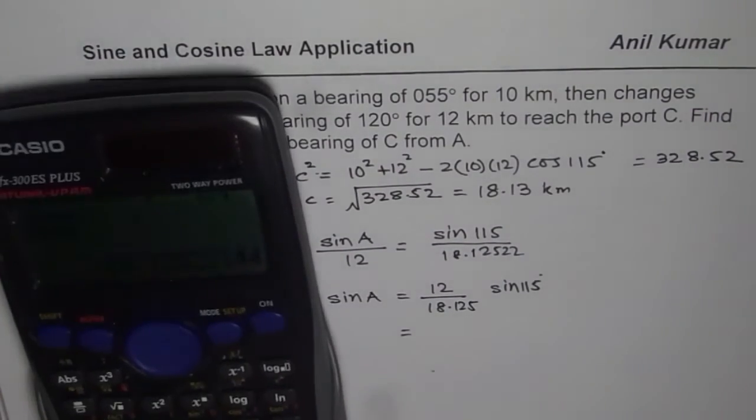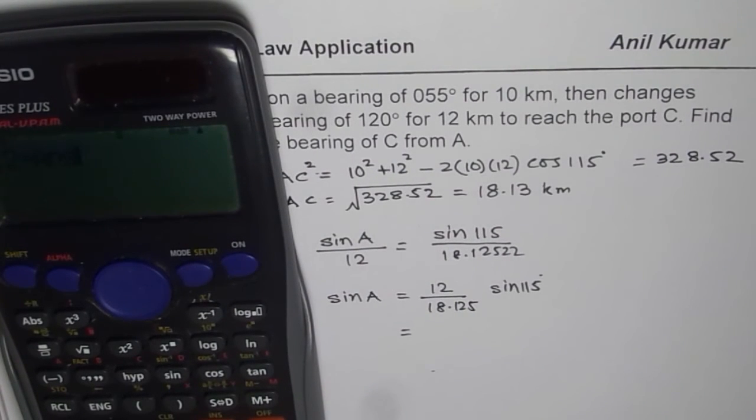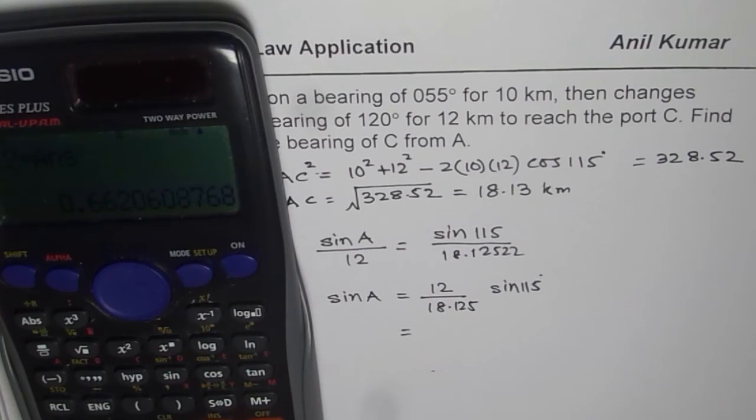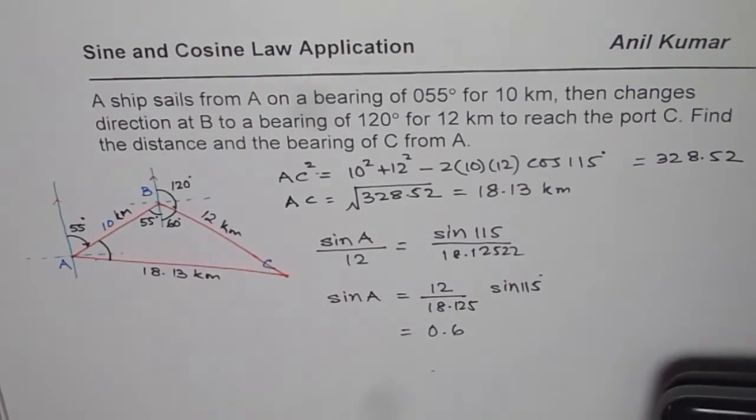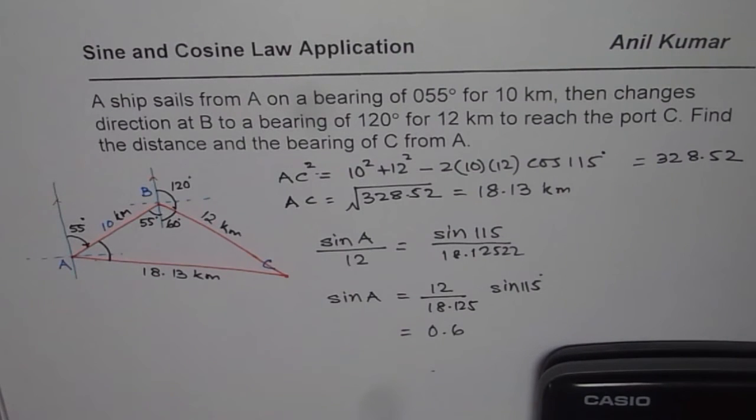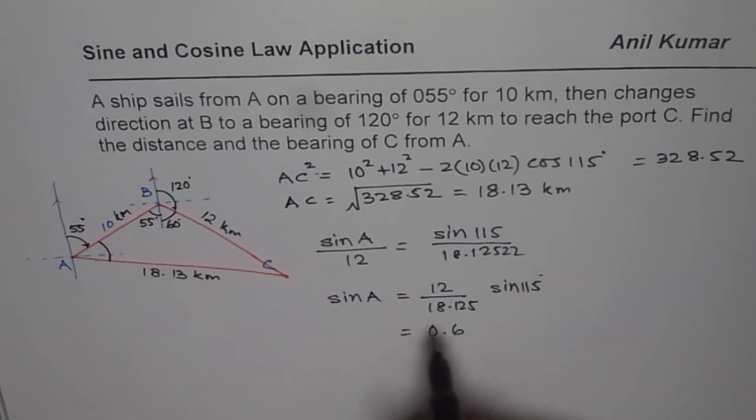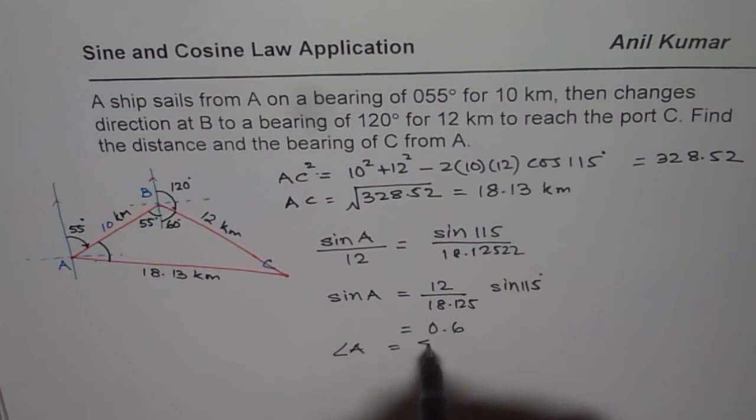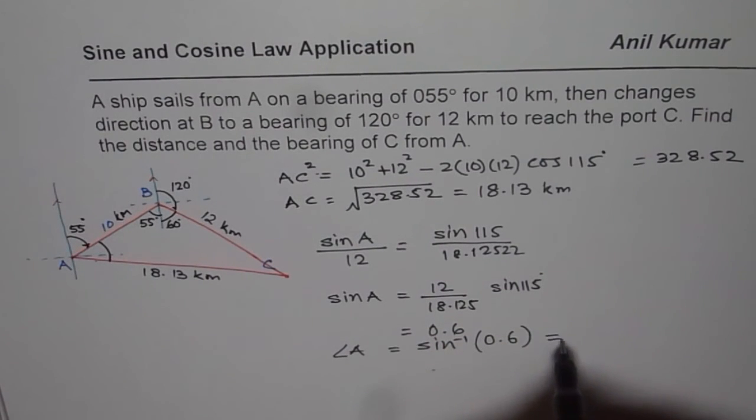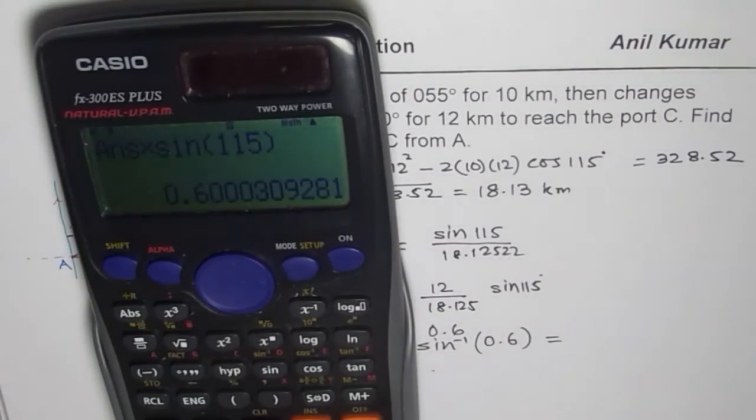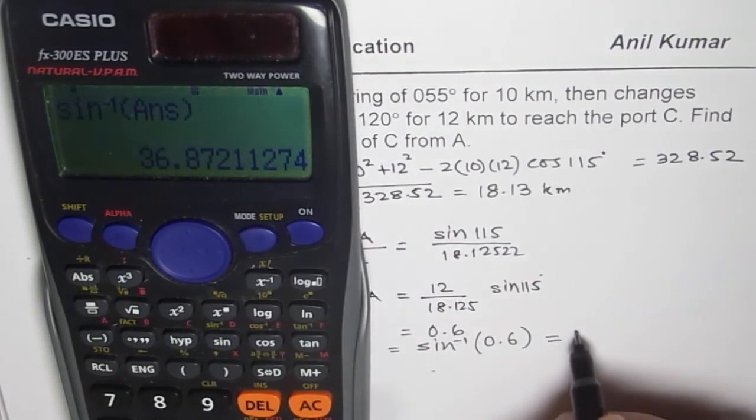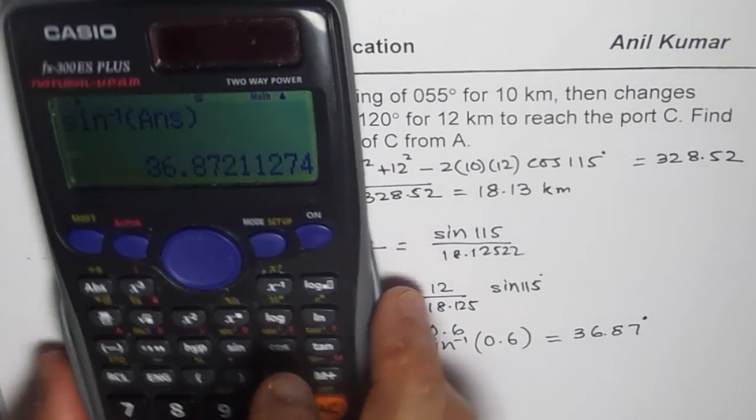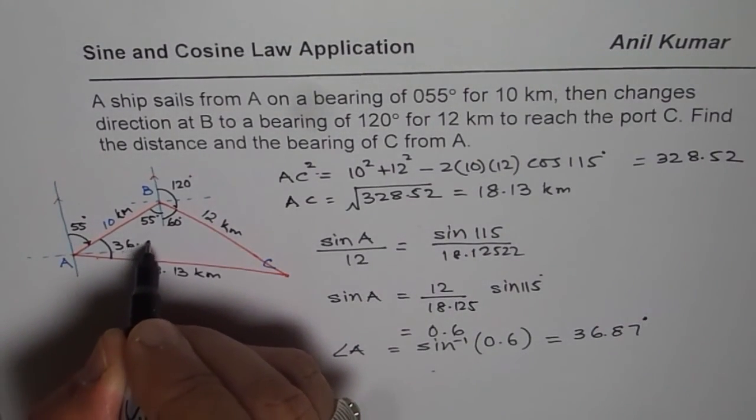From here, we can find sine A. So sine A is equal to 12 divided by 18.125 times sine of 115 degrees. Let us calculate. So we have 12 divided by our answer, and then we will multiply this by sine of 115. So what we get here is 0.6. So 0.6 is the sine A value. Let us find what A is. So angle A is equals to sine inverse of 0.6, and that should be equal to, let us find this. So we have second function, sine inverse of our answer, and we get 36.87 degrees. So this angle is 36.87 degrees.